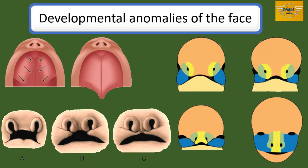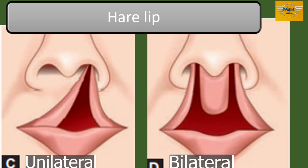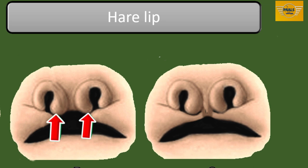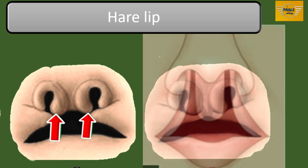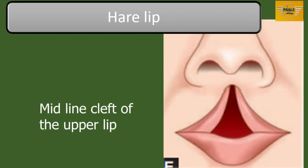The formation of the face involves fusion of various components. Occasionally, this fusion may be incomplete or may not happen at all, leading to various anomalies. The first anomaly we'll handle is a cleft in the upper lip called harelip. Harelip can be unilateral or bilateral. Unilateral harelip is a failure of fusion of the maxillary process with the median nasal process on one side. When this failure occurs on both sides, it leads to bilateral harelip. There is also a midline cleft of the upper lip, resulting from defective development of the lowermost part of the frontonasal process.